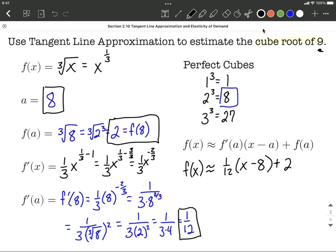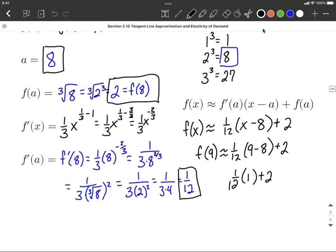Now that we have our formula, let's actually use it to approximate the cube root of 9. So this is going to work out to be where you replace the x with a 9. It's going to work out to be 1 twelfth, in our case, 9 minus 8, plus 2, which all works out to be 1 twelfth times 1 plus 2 would be 1 twelfth plus 2. It would be 2 and a twelfth, or if you want to get a common denominator, it would be 1 twelfth plus 24 twelfths. It works out to be 25 twelfths as an exact answer.